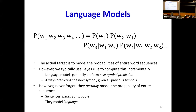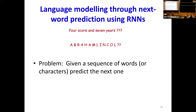Once we say we are going to decompose it into the problem of always predicting the distribution for the next symbol in the sequence, we reduce it to something like this: 'Four score and seven years' — if I ask anybody here what's the next word, it's 'ago', right? You are certain. Or if I give you 'A, B, R, A, H, A, M, L, I, N, C, O, L' — what is the next character? You'd know it's 'N'. So once you know enough of the context, the next one seems almost evident. It doesn't mean it's always going to be N — maybe there's a guy named Lincoln — but it's highly unlikely.